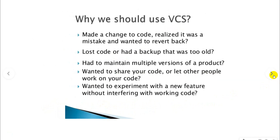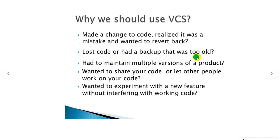So why should we use a version control system? Here are some points to justify that. First, you may make a change to your code, realize it was a mistake, and want to revert back to the original file. Second, you may have lost code or had a backup that was too old — in that case, you should use a version control system.